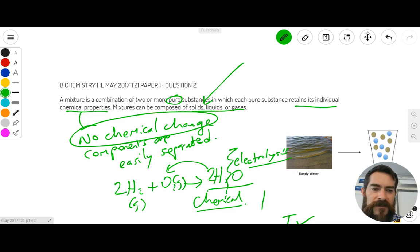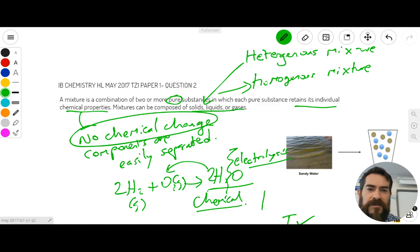In our definition I did highlight this second part of the definition which talks about the fact that mixtures can be solid, liquid, or gaseous phase. Now the IB teaches you guys two definitions for a mixture. You're taught about a heterogeneous mixture and you're also taught about a homogeneous mixture. Now what this means is a heterogeneous mixture has two or more different phases for the components.